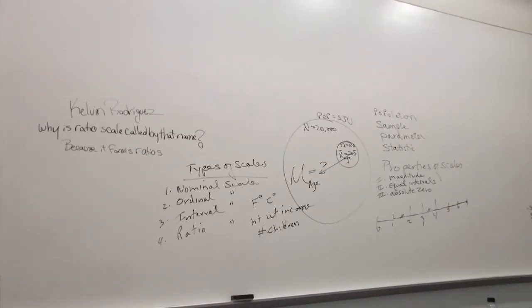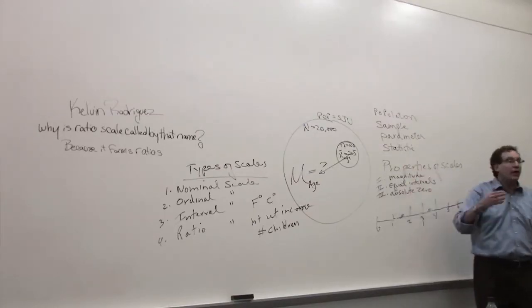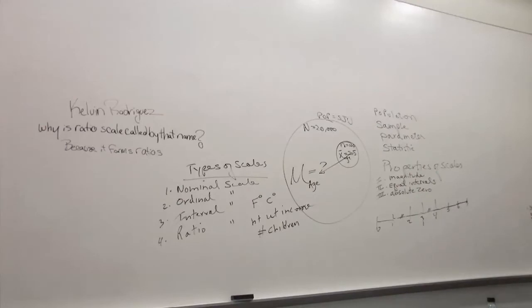I said, the reason why it's called a ratio scale is because the ratio scale has these properties. When you have these properties, you're able to form ratios. You're able to immediately say something is twice as big as something else. You can't do that with the other scales. That's the whole thing.